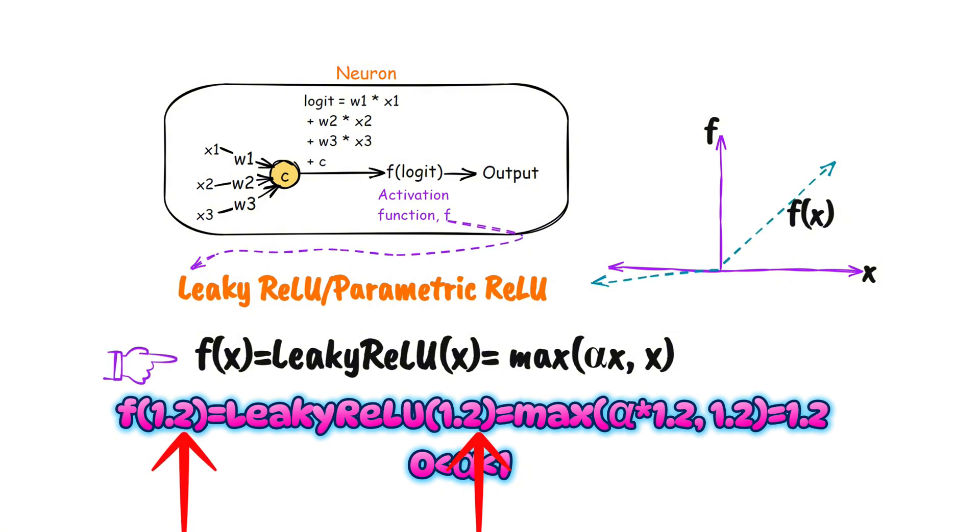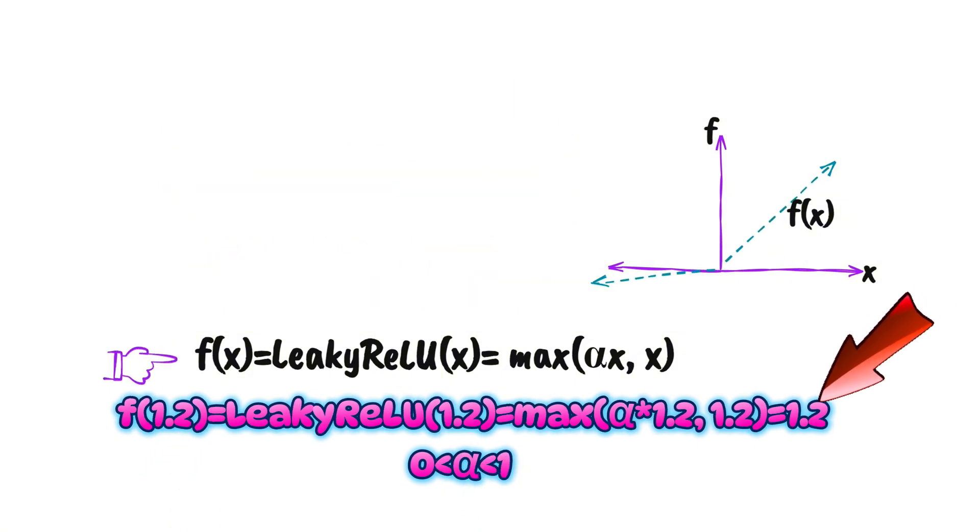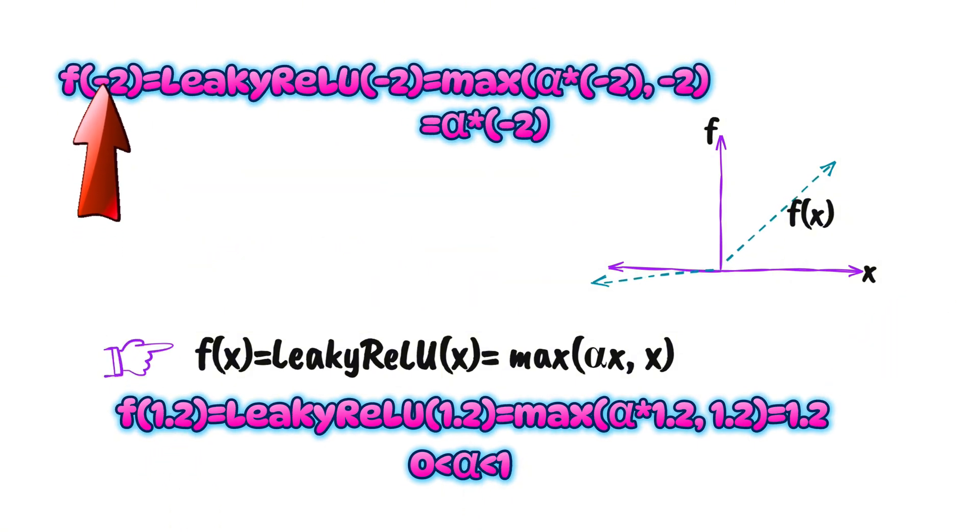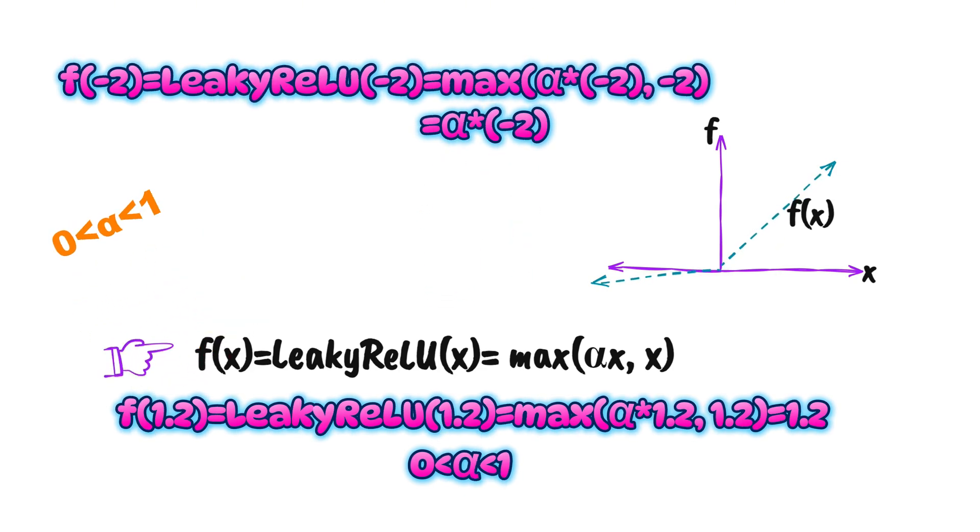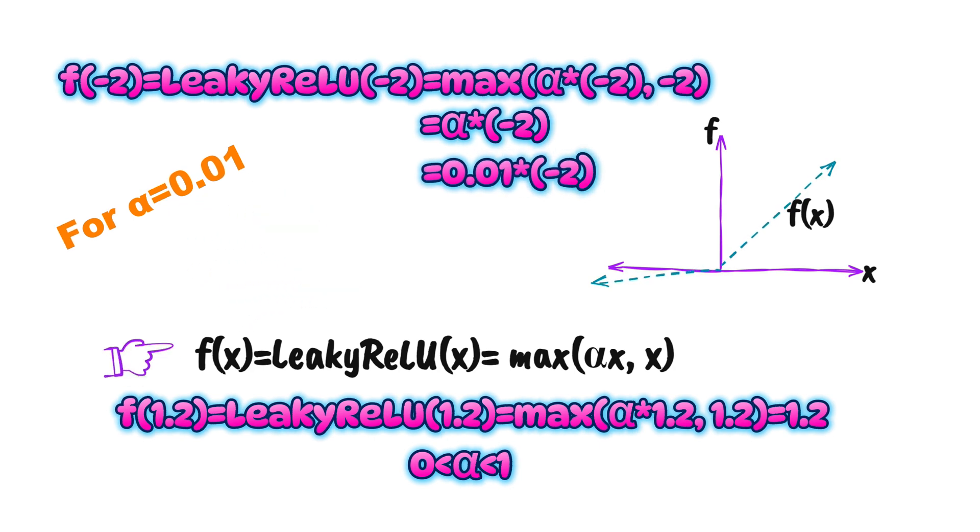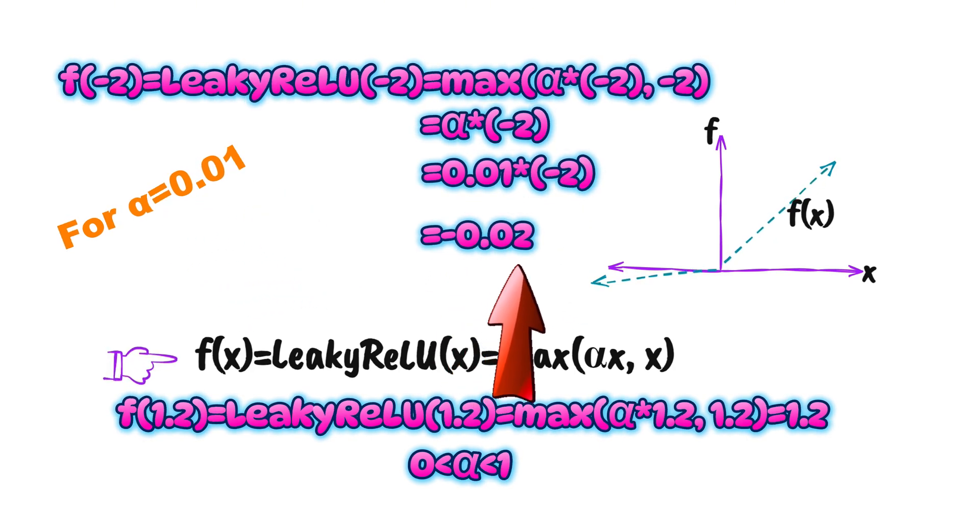For example, if the input is 1.2, then the output is 1.2. If the input is negative 2, then the output is negative 2 times alpha, where alpha is a small number. If alpha is 0.01, leaky ReLU will output negative 2 times 0.01, which is equal to negative 0.02.